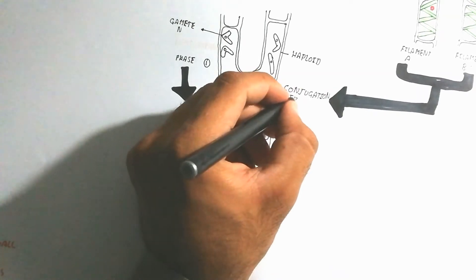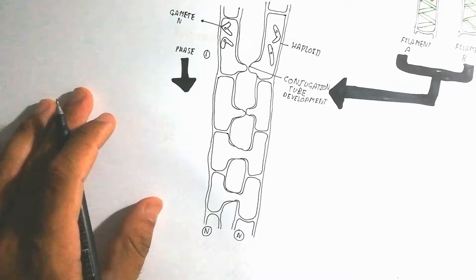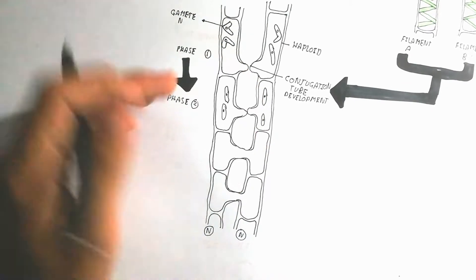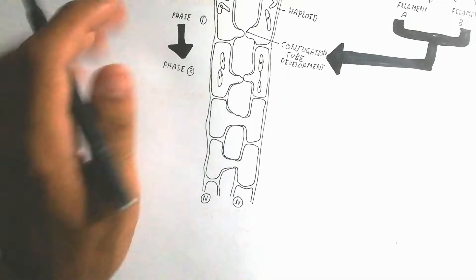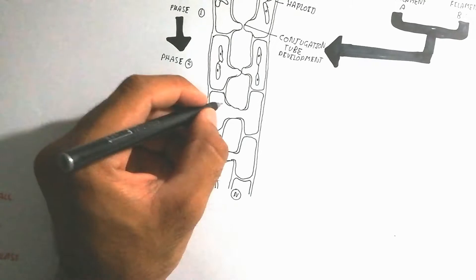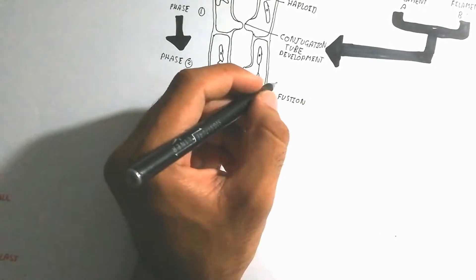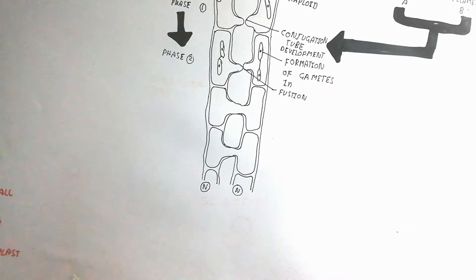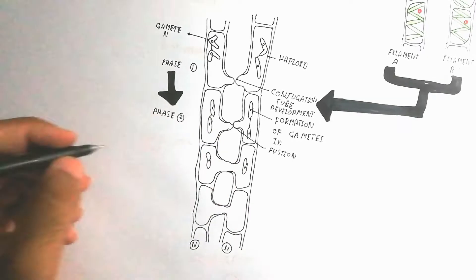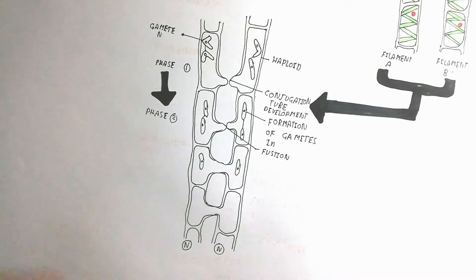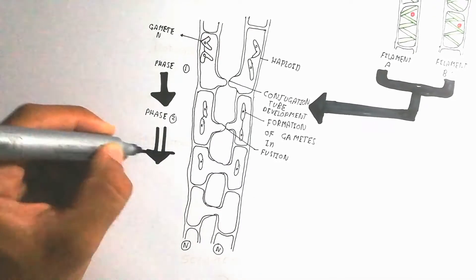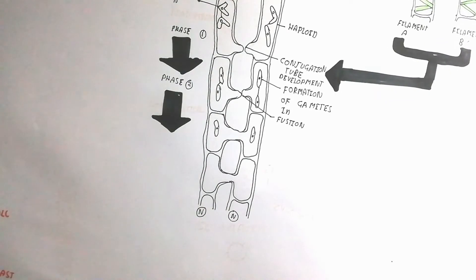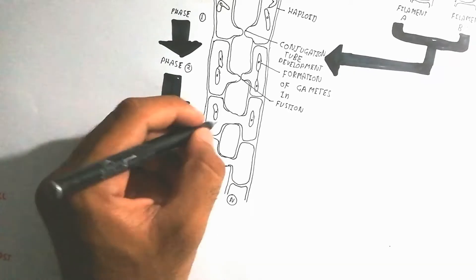Phase one: the conjugation tube development process begins. The conjugation tube develops and the process proceeds to phase two. The conjugation tube grows more and the two conjugating tubes fuse together — this fusion is called attachment. Both conjugation tubes open into a single conjugation tube, forming an open passage.